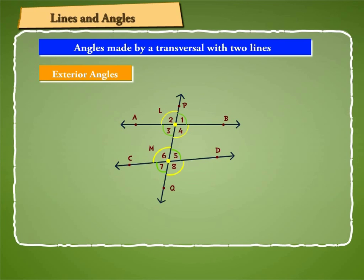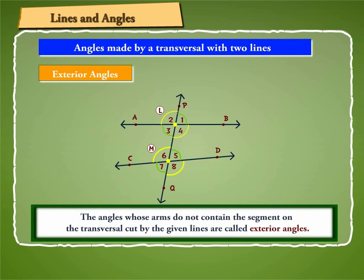So in the figure, angle 1, angle 2, angle 7 and angle 8 are such angles whose none of the arms contain the segment LM. These are exterior angles. Hence the angles whose arms do not contain the segment on the transversal cut by the given lines are called exterior angles.